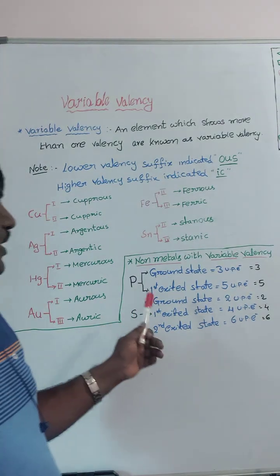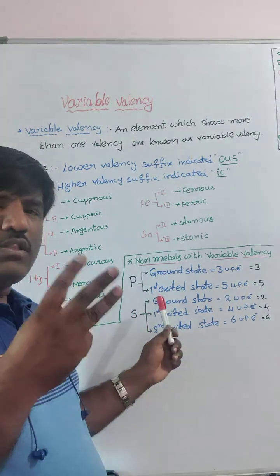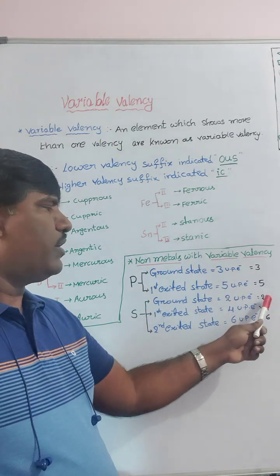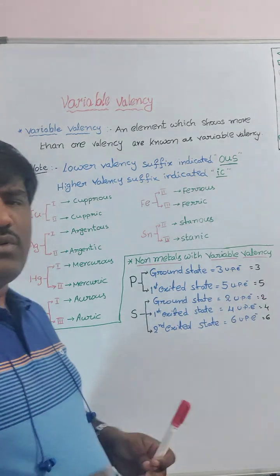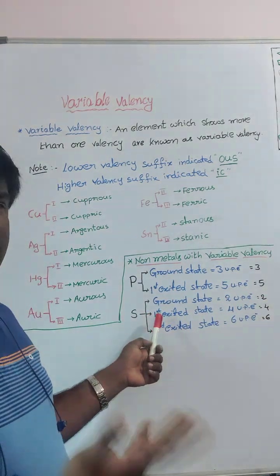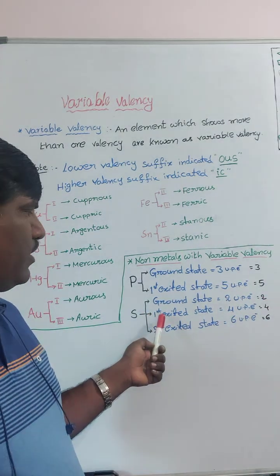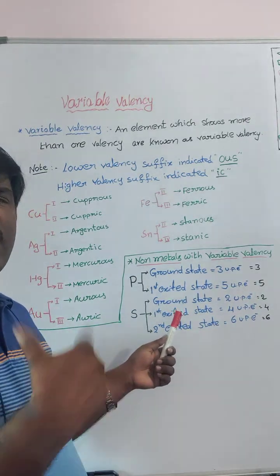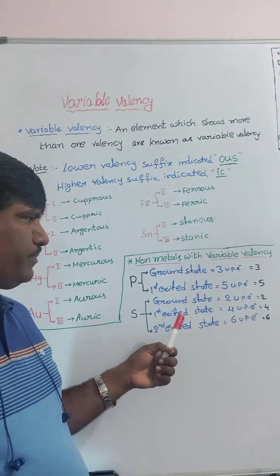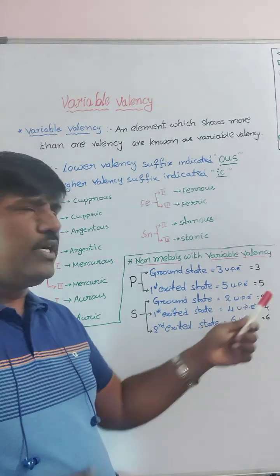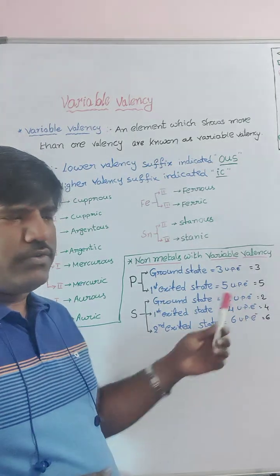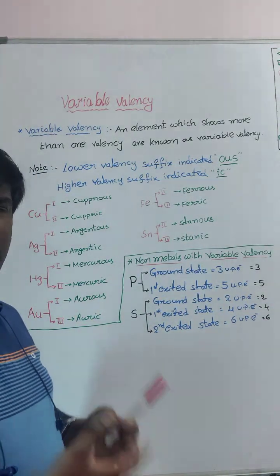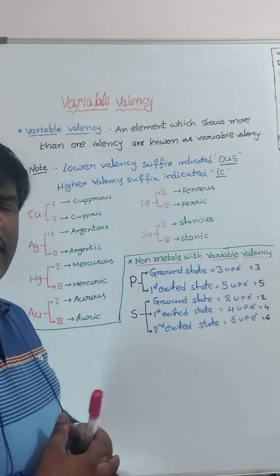Sulfur also has three different valencies. In the ground state, it has two unpaired electrons, so valency is two. In the first excited state, by absorbing some energy, one electron moves to another orbital, giving four unpaired electrons — so valency is four. In the second excited state, it gains still more energy.